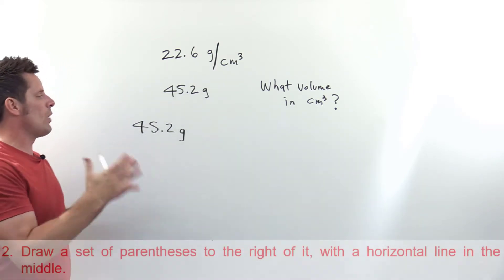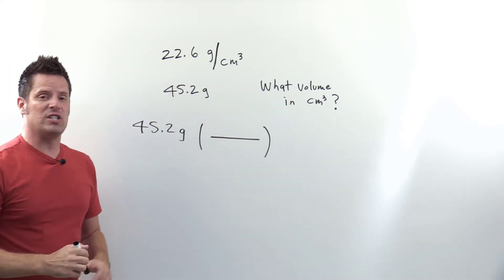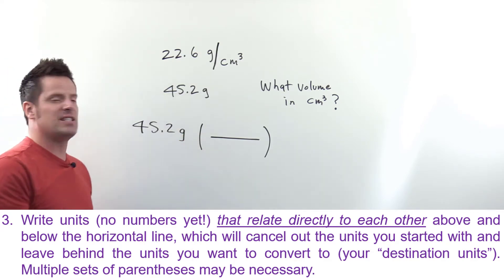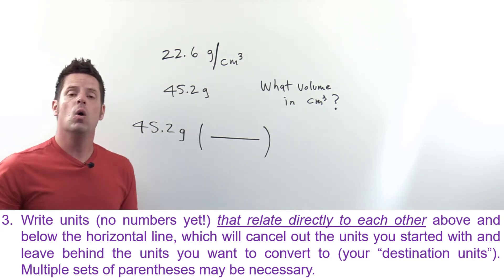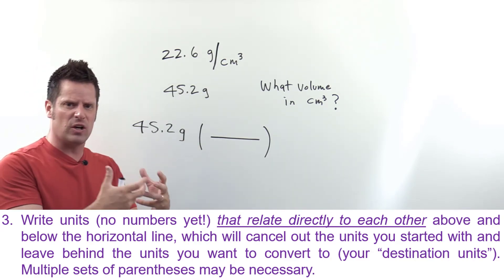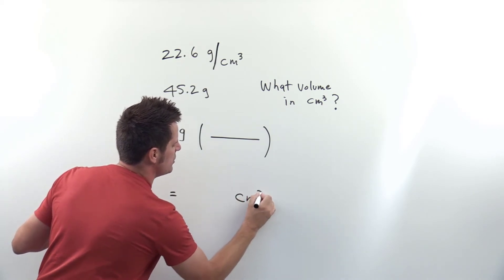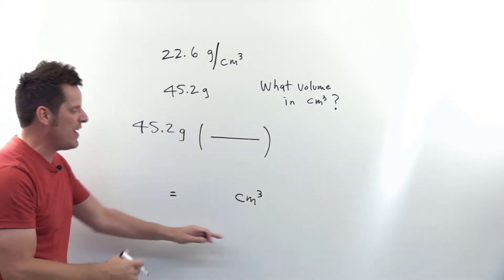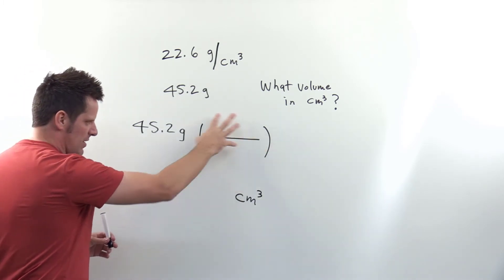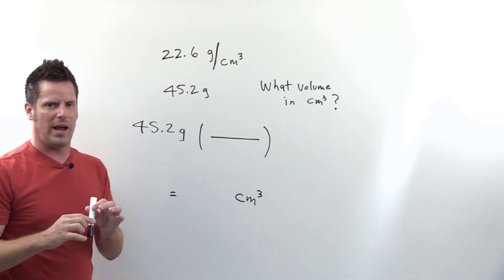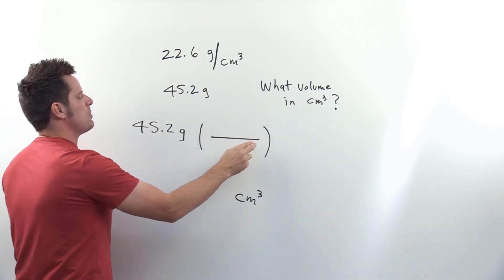The next step is write down a set of parentheses to the right of the value you just wrote down. Now we go on to step three which is start writing down units in your parentheses that will cancel out the units you began with and eventually arrive at the destination units. What units should our final answer have? As we read in the question, it asks us for a volume in cubic centimeters. So I want to do some type of unit manipulation, canceling out this unit of grams to eventually arrive at an answer that has cubic centimeters. My tactic is almost always to put the units here in the bottom that will cancel out the units in the top. So I've got grams up top which means I'm going to have grams down bottom.